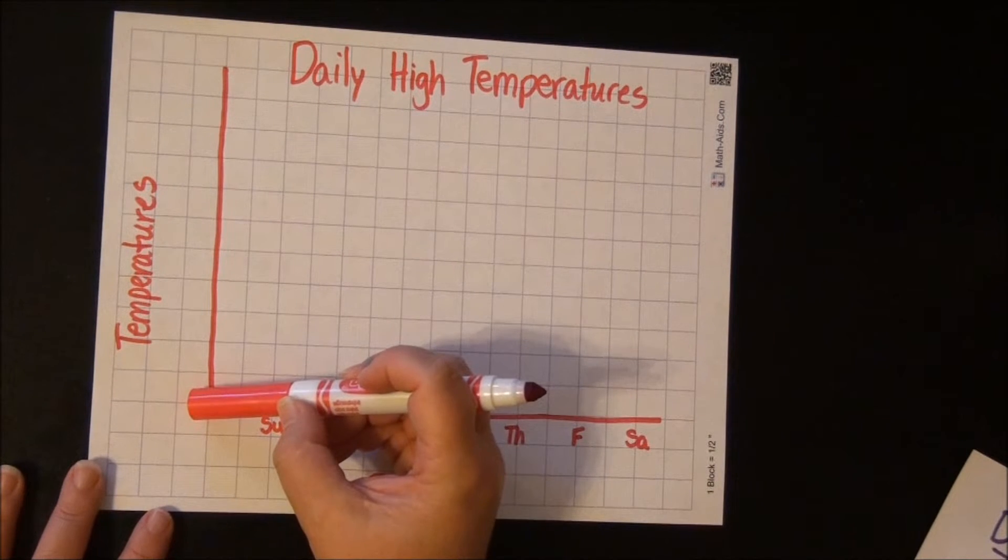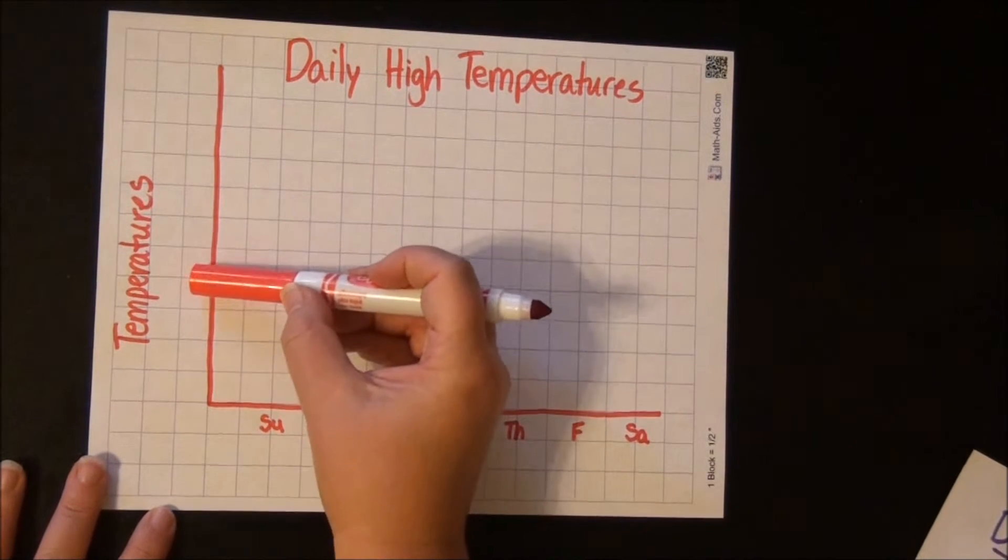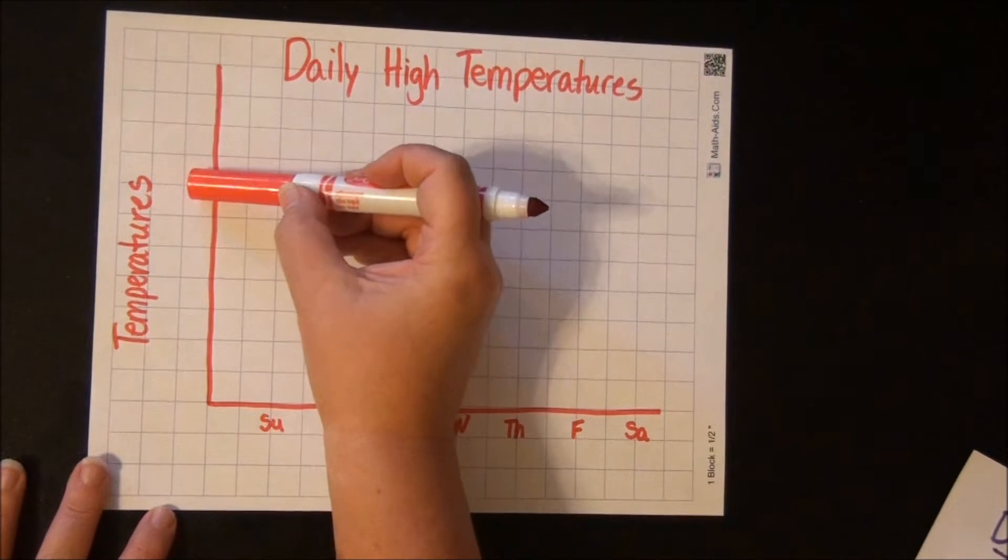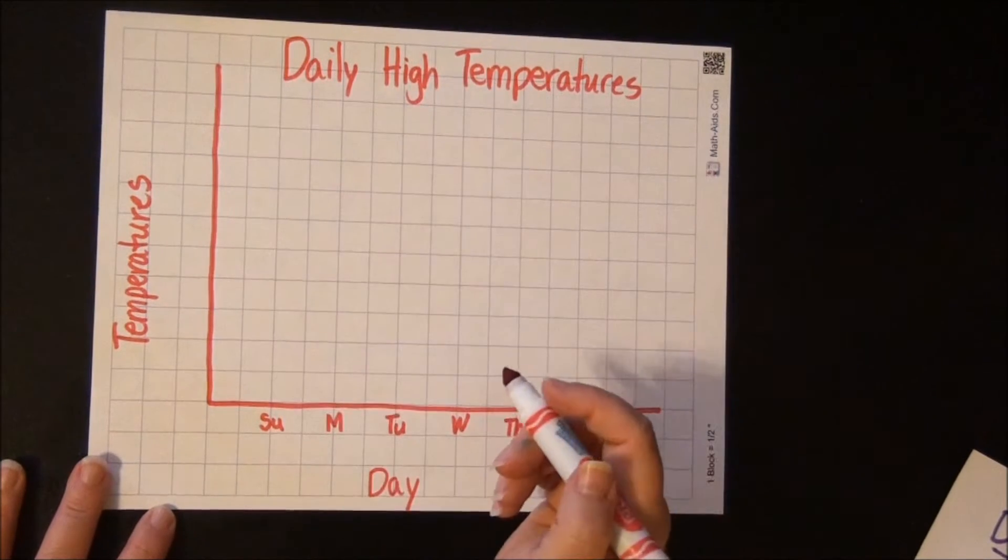So if I do 90 here, we have 91, 92, 93, 94, 95, 96, 97, 98, 99, 100. So that'll work perfectly.